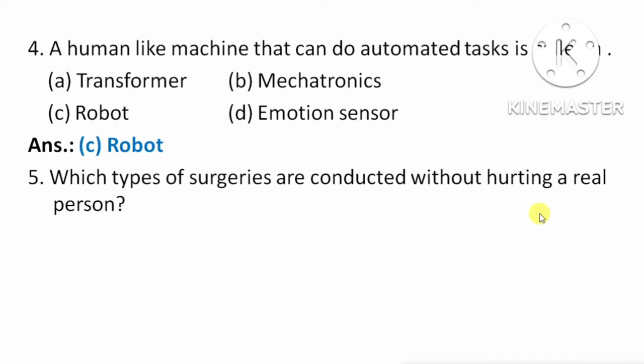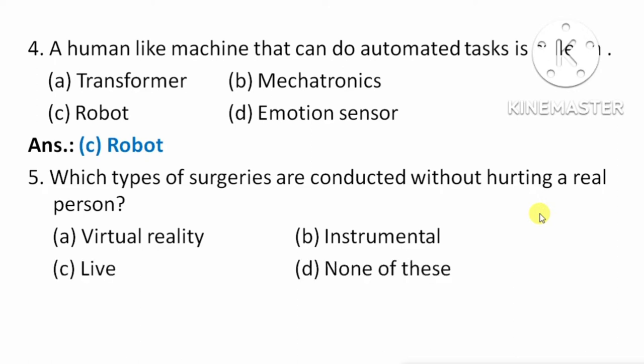Next question: which type of surgeries are conducted without hurting a real person? Means, किस तरह की surgery की जाती है एक real person को बिना hurt किये? Option A: Virtual Reality. Option B: Instrumental. Option C: Live. Option D: None of these. The right answer is Option A, Virtual Reality.